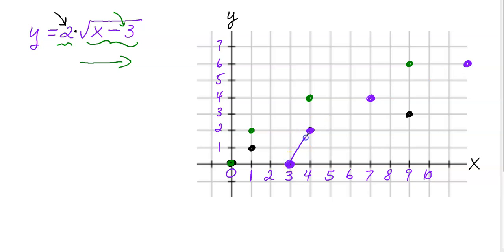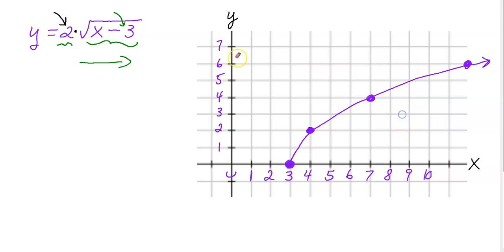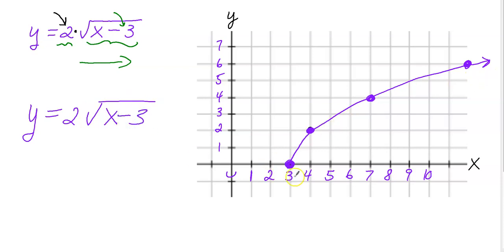There you go, you're finished. I'll just erase all the helper points I made so we have a nice clean graph at the end. This graph in purple represents y equals two times the square root of x minus three. You did it all without making a table or using a calculator.